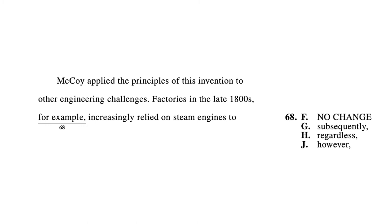Let's look at question 68. We have: F is "for example" — affirmative. G is "regardless" — that seems a little contradictory. H is "however" — classic contradictory. J is "subsequently" — one of those time words. So this allows us to remove H and J, and we're left with "for example" and "subsequently". At least we're at a 50-50 guess, but I'd go with "for example" — and I'd be right. The reason is that the word "subsequently" and "increasingly" — if you have two -LY words back to back, it doesn't sound very good.